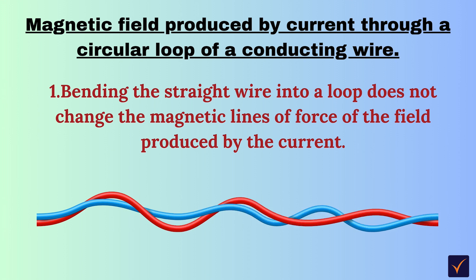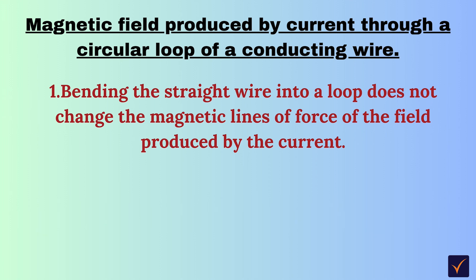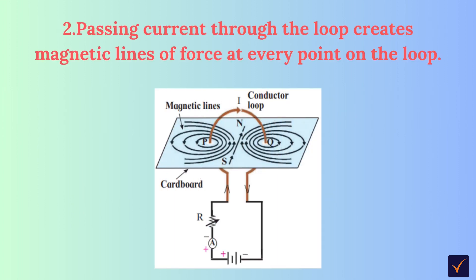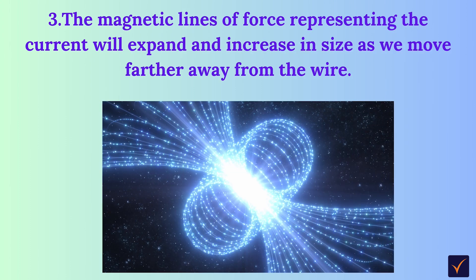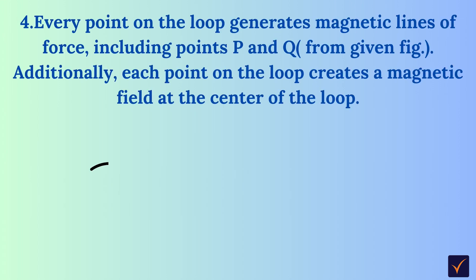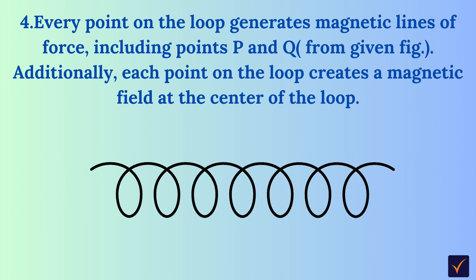Let us learn about the magnetic field produced by current through a circular loop of a conducting wire. If we bend a straight wire into a loop, it does not change the magnetic lines of force of the field produced by the current. Passing current through the loop creates magnetic lines of force at every point on the loop. These magnetic lines of force expand and increase in size as we move farther away from the wire. Every point on the loop generates magnetic lines of force, including points P and Q shown in the figure.